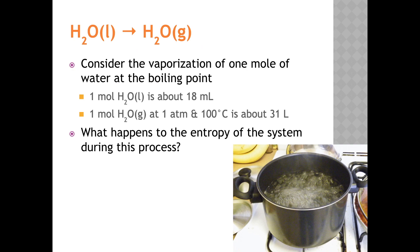Here's another system to consider: the vaporization of one mole of liquid water at the boiling point. The system is the water, so everything else in the universe is the surroundings. One mole of liquid water is about 18 milliliters — about a tablespoon — and a mole of water vapor at standard pressure and 100 degrees Celsius is about 31 liters, like eight gallons. Delta S of the system is positive, greater than zero, because when a mole of water turns into a mole of steam, it spreads out, the molecules have more possible positions, and the entropy of the system increases.